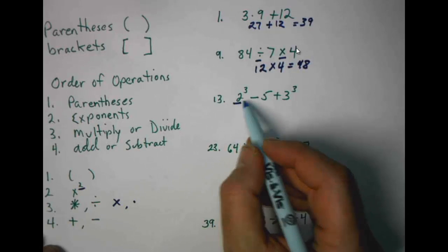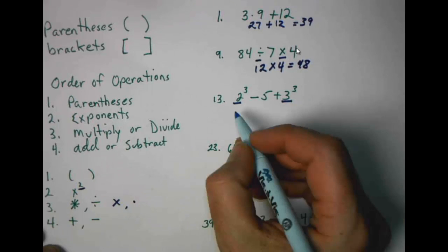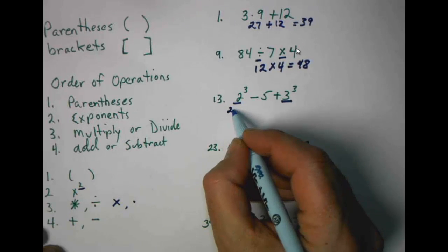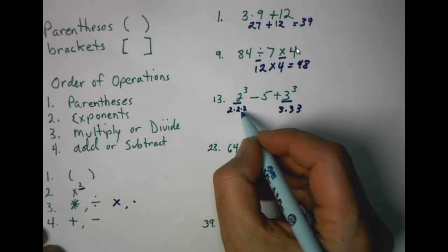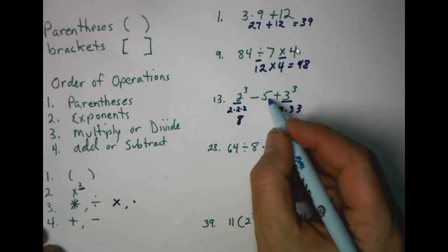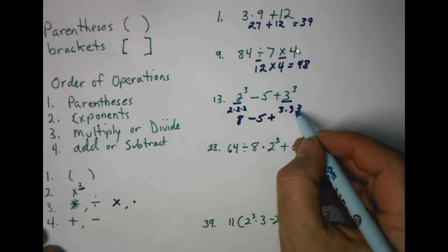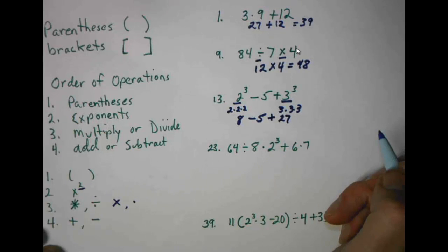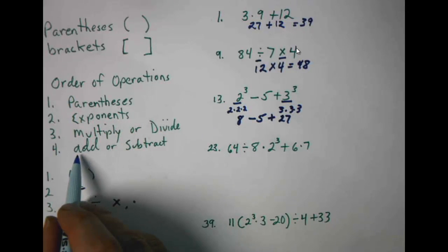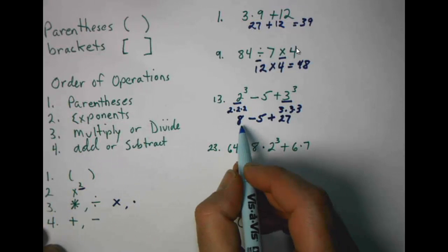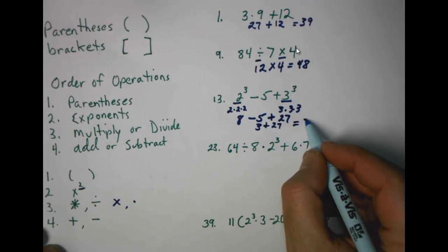Problem number thirteen has exponents. We check the list: no parentheses, but we have exponents, so we do those first. Two to the third is two times two times two, which gives eight. Three to the third is three times three times three, which gives twenty-seven. Dropping down the minus five and the addition sign, we do eight take away five equals three, then three plus twenty-seven gives us a total of thirty.